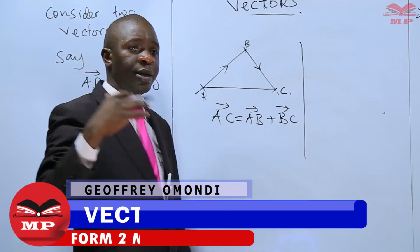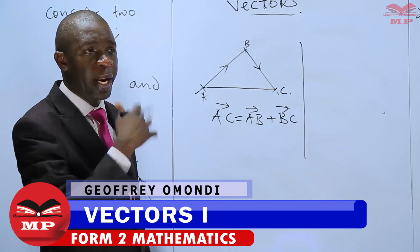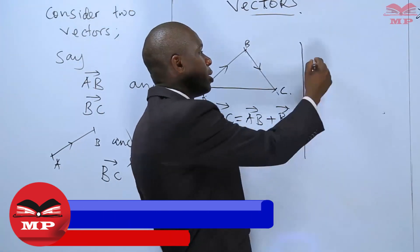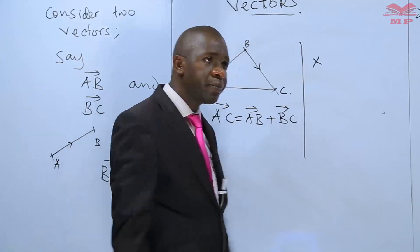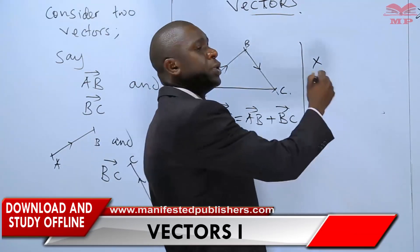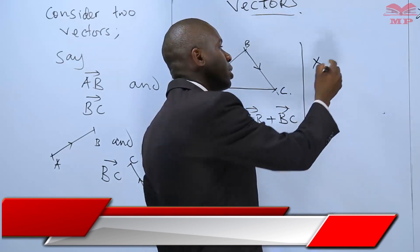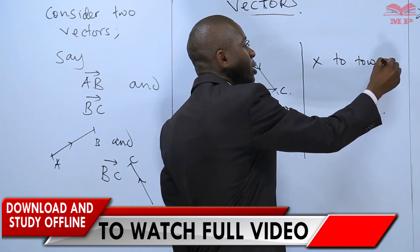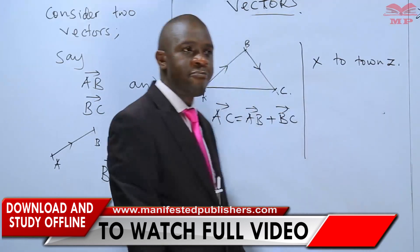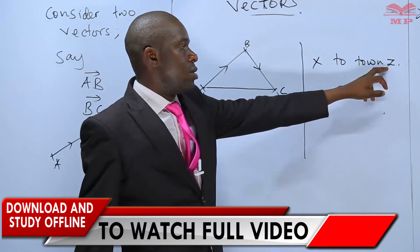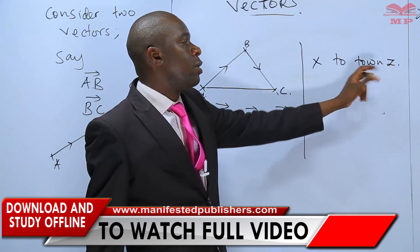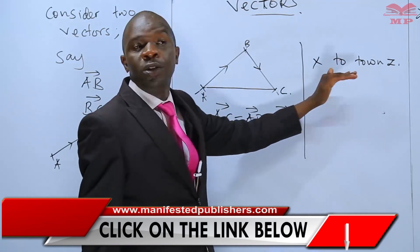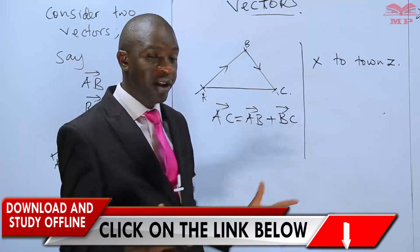I want us to look at a very simple explanation. Say you are at point X, and somebody requires you to move to a town, say town Z. You know that you're supposed to move from X to town Z, but you don't know the way, so it means you don't have direction.